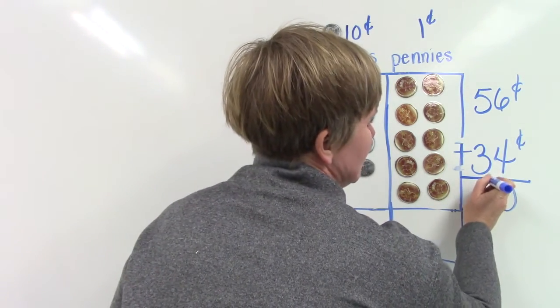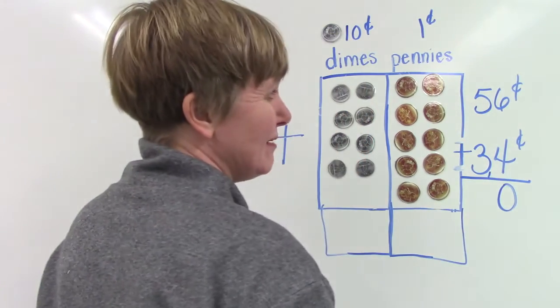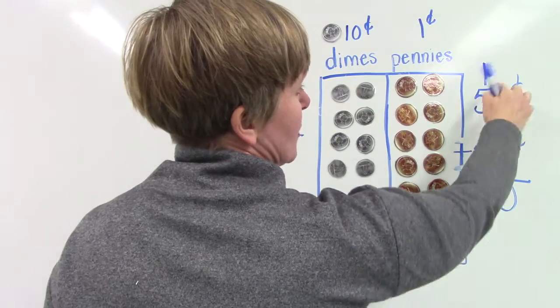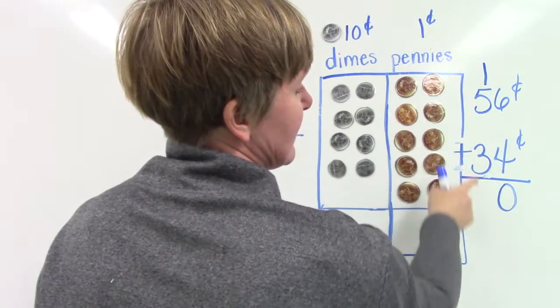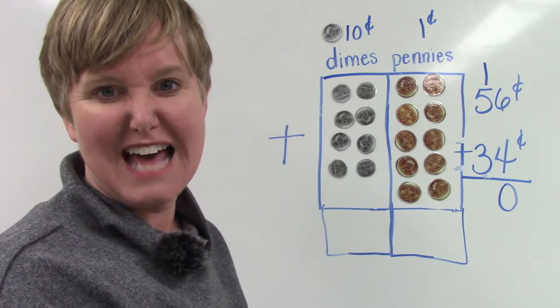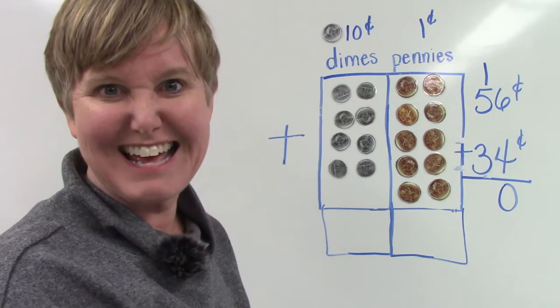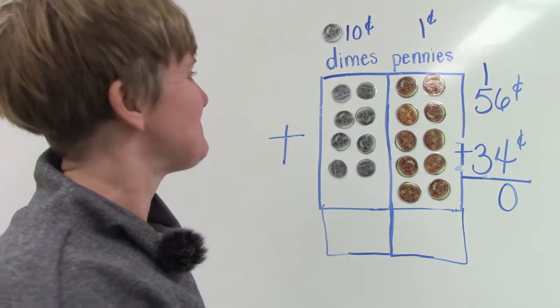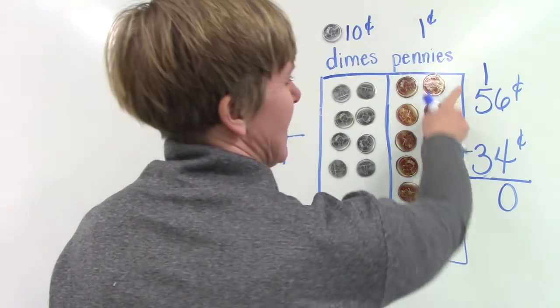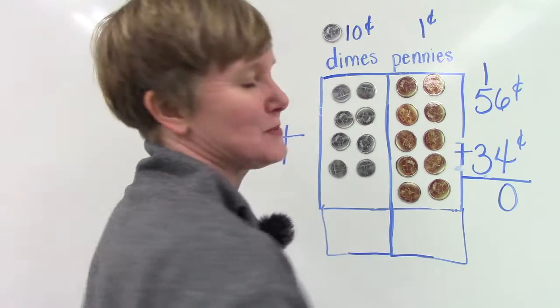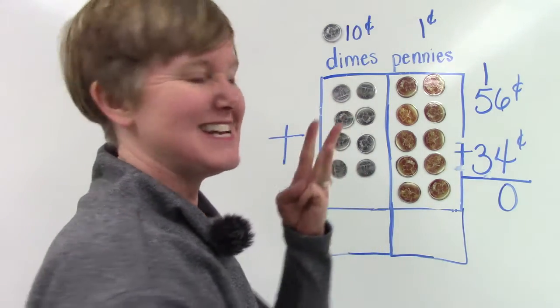We can make a little one - we could put it right here or some people put the one up on top. You would be adding one group of 10 to the tens place, just like if you were trading pennies for a dime. We have 1 plus 5 which is 6, plus 3 more: 6, 7, 8, 9.